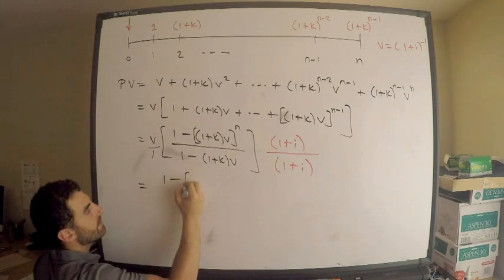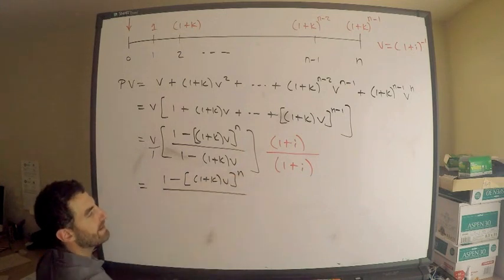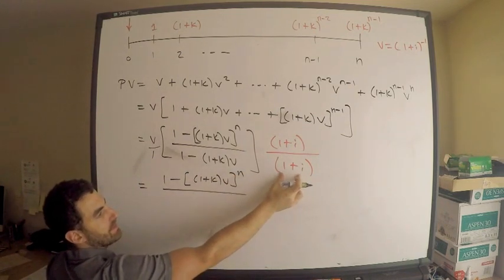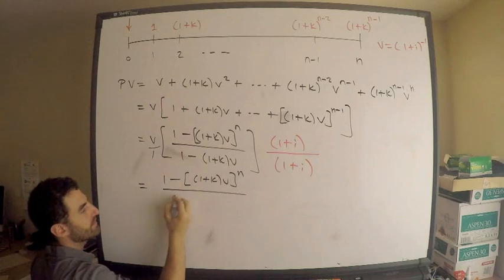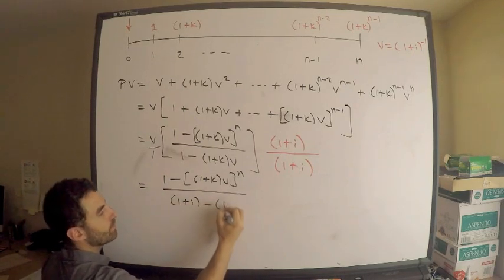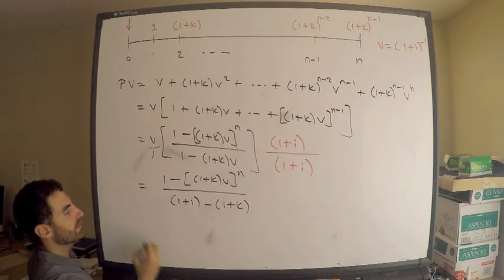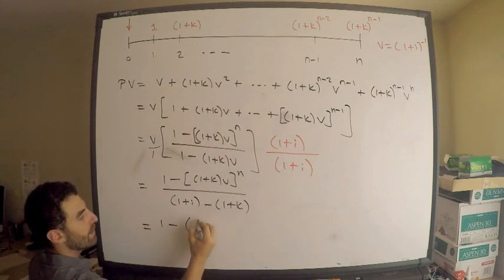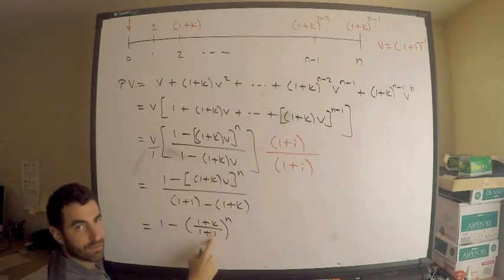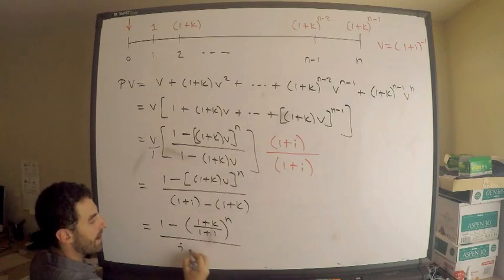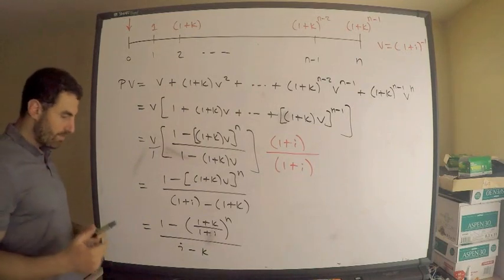Down below, distributing (1+i) through the denominator: (1+i)·v cancels to give 1, and (1+i) times (1+k)v becomes (1+k). So the denominator becomes 1+i − (1+k), which simplifies to i − k, using the definition of v. The full expression becomes [1 − (1+k)^n · v^n] / (i − k), or equivalently [1 − ((1+k)/(1+i))^n] / (i − k).